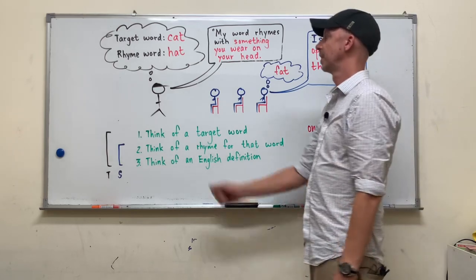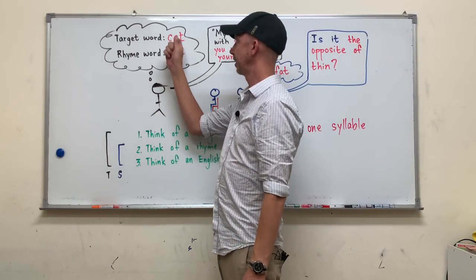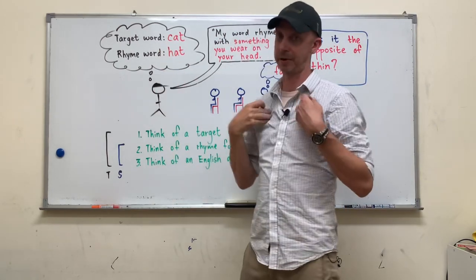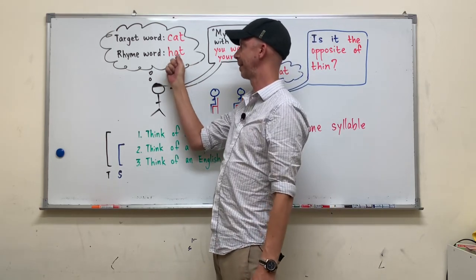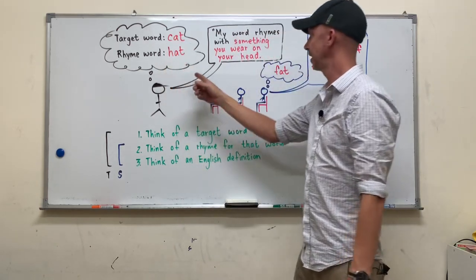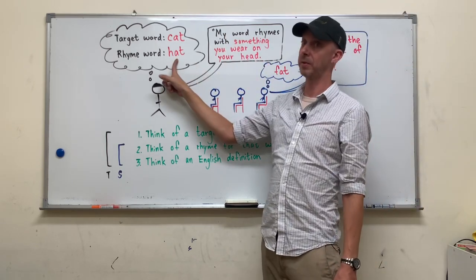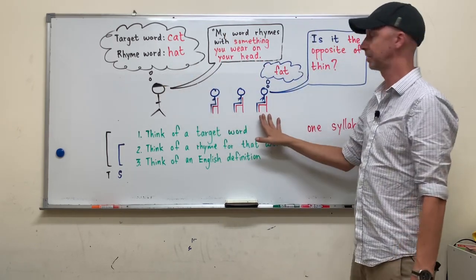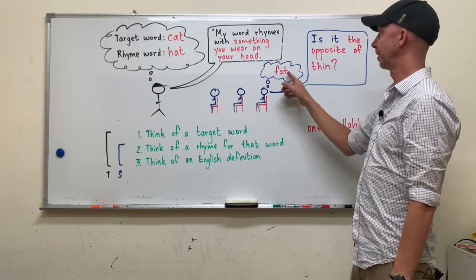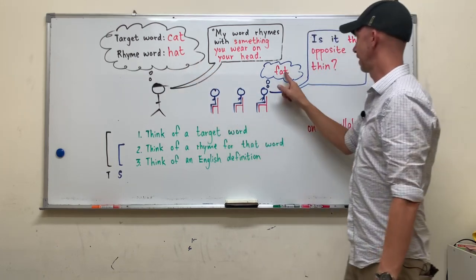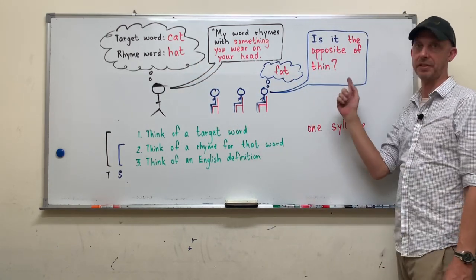So quickly to review, the person will think of a target word. Then the person will think of a word that rhymes with that target word. And then he or she will say an English definition for the rhyming word. And then the students will think of a word that rhymes with that and guess their English definitions.